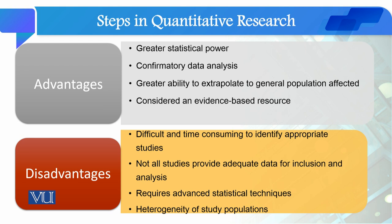اب دیکھتے ہیں کہ اس کے disadvantages کیا ہیں۔ پہلا disadvantage یہ ہے کہ یہ ایک بڑا difficult اور time consuming کام ہے — to identify appropriate studies کہ کن studies کو meta-analysis میں add کریں اور کن کو نہیں۔ اس کے علاوہ not all studies provide adequate data for inclusion and analysis — کچھ studies impact factor studies ہوتی ہیں اور کچھ local studies ہوتی ہیں جن میں statistical rigorousness نہیں ہوتی، اس لیے یہ فیصلہ کرنا مشکل ہوتا ہے کہ کن کو include کرنا ہے۔